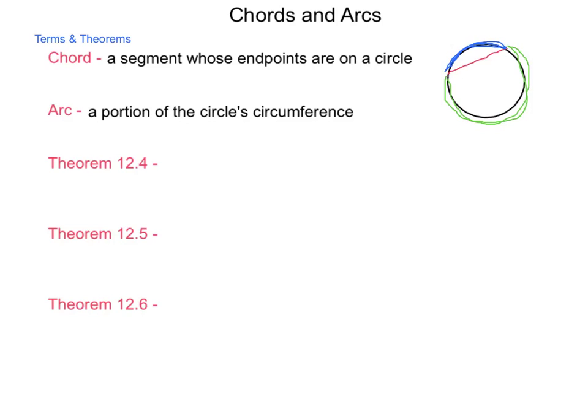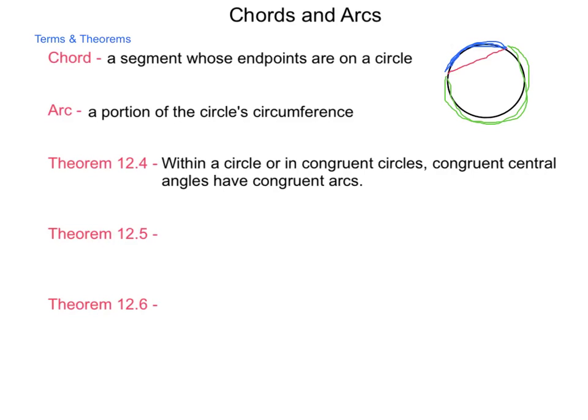So first, theorem 12.4. This one states, within a circle or in congruent circles, congruent central angles have congruent arcs. Now, when we talk about central angles, what that means is if we were to draw radii from the center of our circle out to the endpoints of the arc, that inner portion here is the central angle.